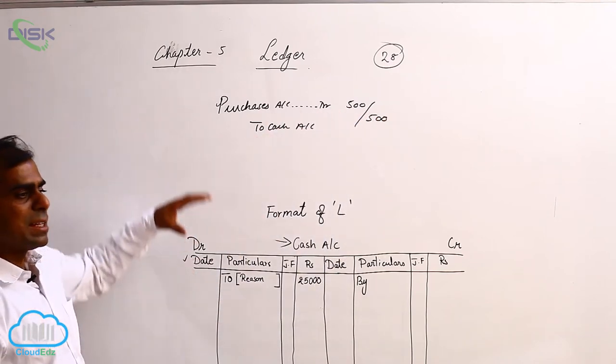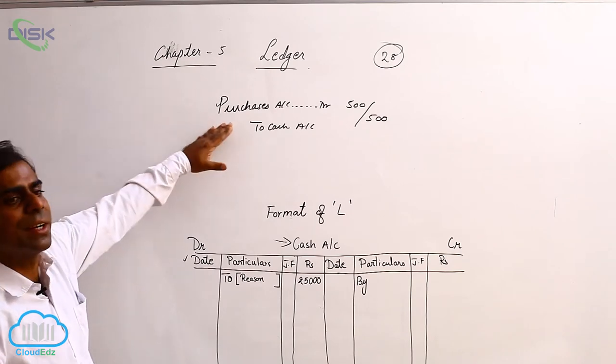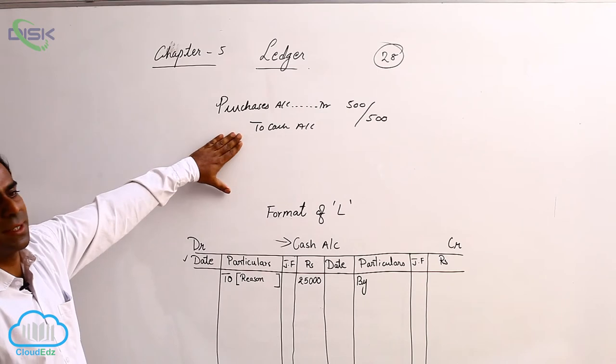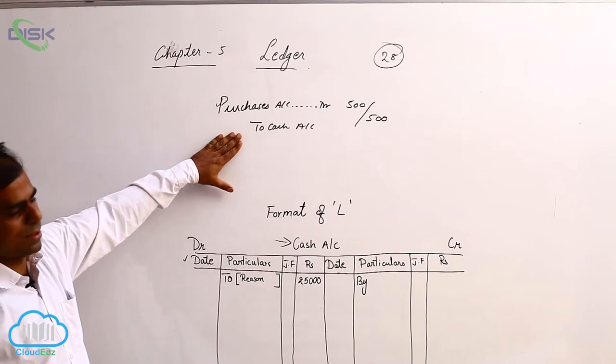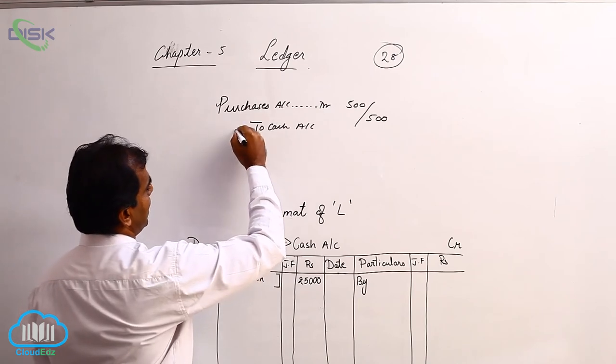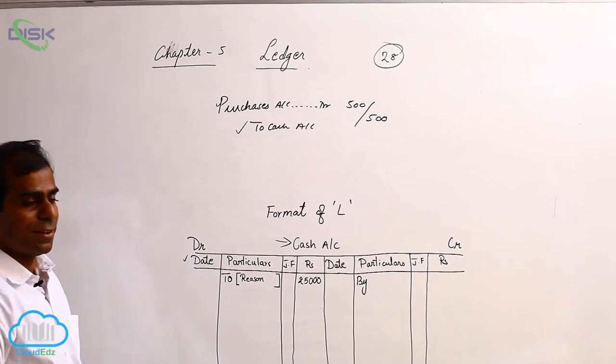As per the posting, we will be opening purchases account and cash account. Since we are discussing only the format, I am restricting to the usage of word cash. As per this journal entry, you see, cash is on the credit side of your journal entry.